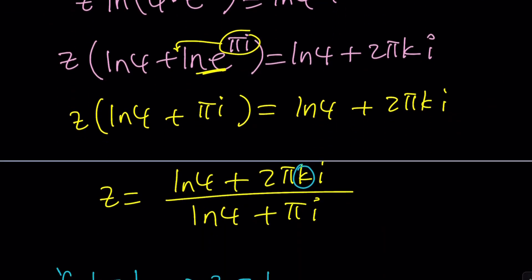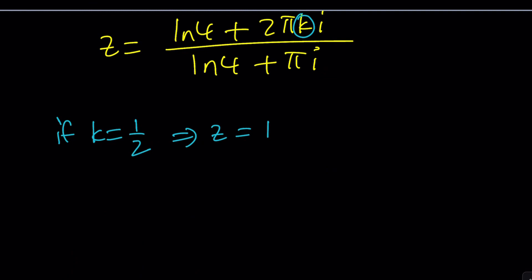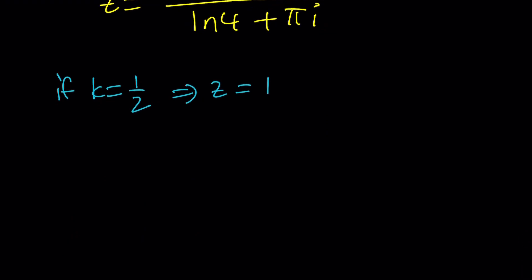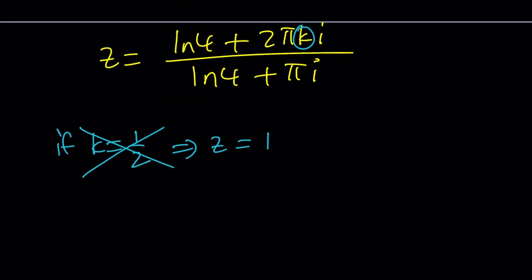All right? Let's just add that to the notes. So, k can't be 1 half. But k can be 0 if, for example, k is equal to 0,